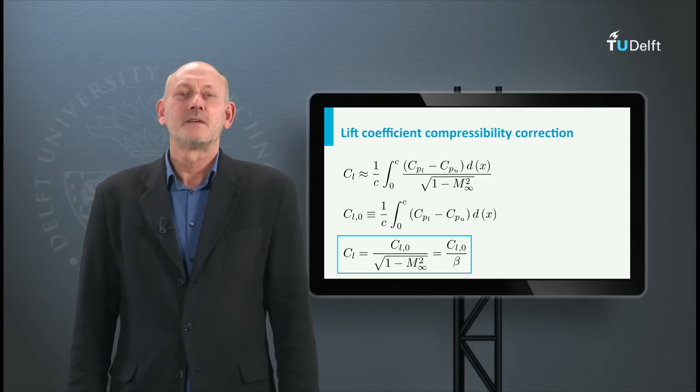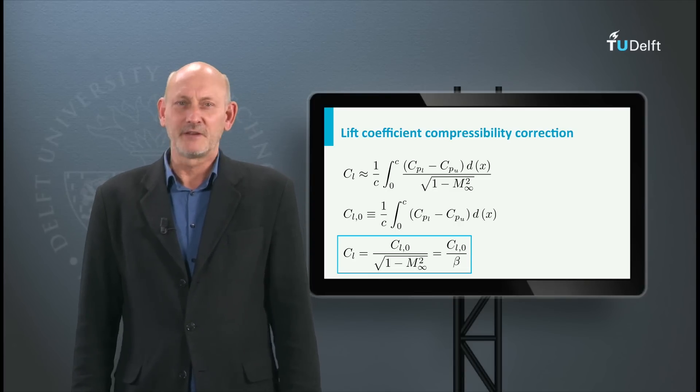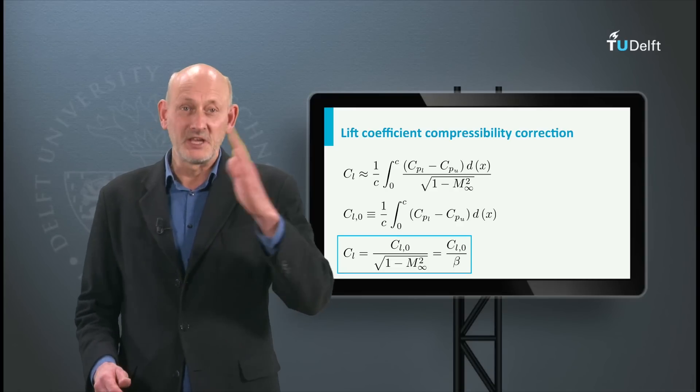Since beta is smaller than 1, the lift coefficient increases with growing Mach number. The lift curve slope or the lift gradient becomes steeper.